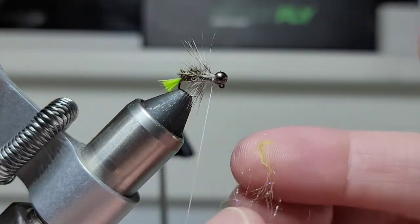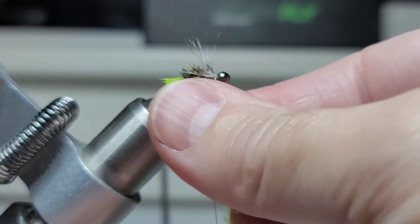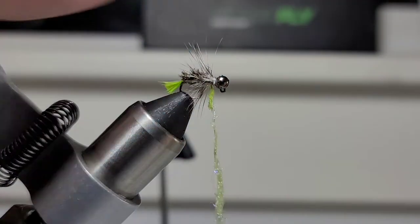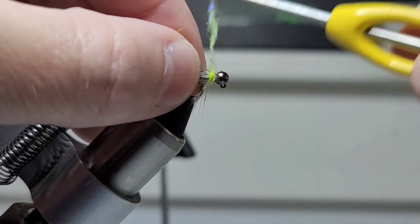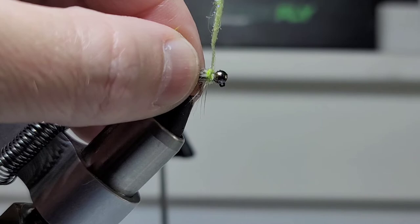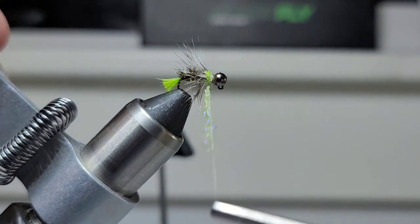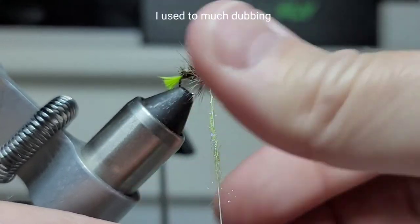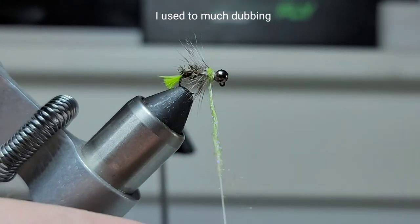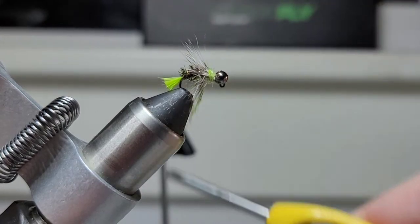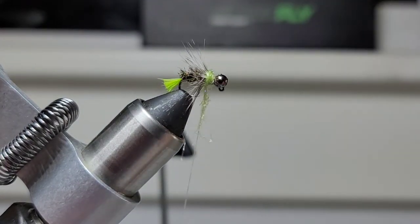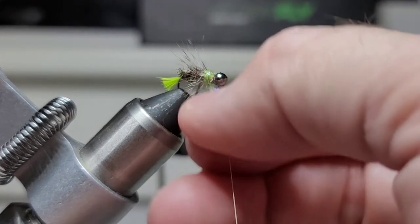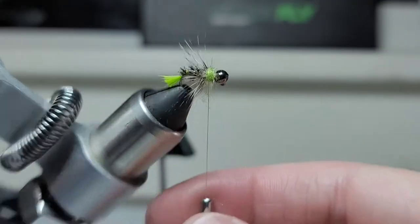Okay, so next we've got some Ice Dub in the light olive. So we're going to bring these back and tie in. Break that off. We'll clean it up.